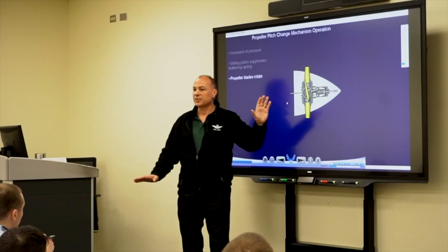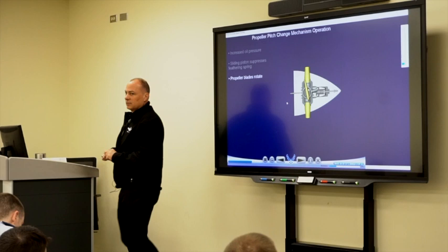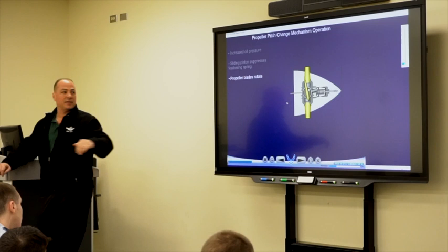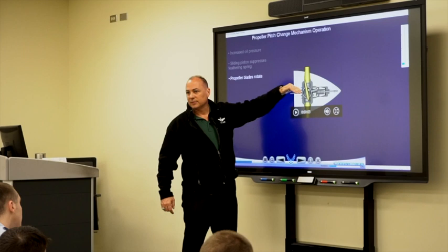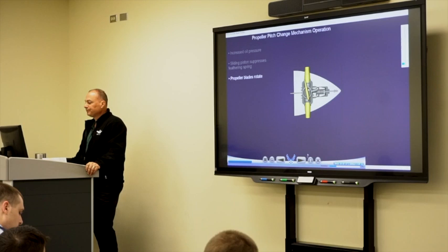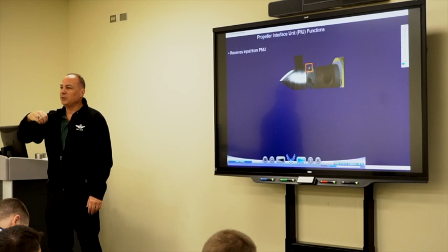Once you go to the cutoff position, or if the feather dump solenoid fails, the propeller will go to feather. So it's not intuitive — I advance the PCL and the prop starts to rotate to cut more air. When I don't need it anymore or I'm shutting off the engine, it goes to feather. That's the PIU up on top of the engine — the device the PMU tells to change that oil pressure going in and out of the pitch change mechanism.